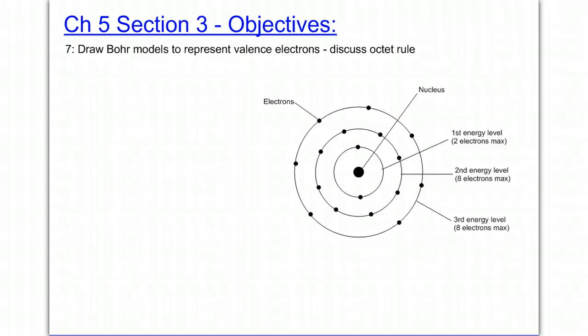This is an example of a Bohr model where we have the nucleus in the center and then we have energy levels. We fill the energy levels in this order where the first energy level can have a maximum of two electrons. And once that's full, the second energy level can have a maximum of up to eight electrons.